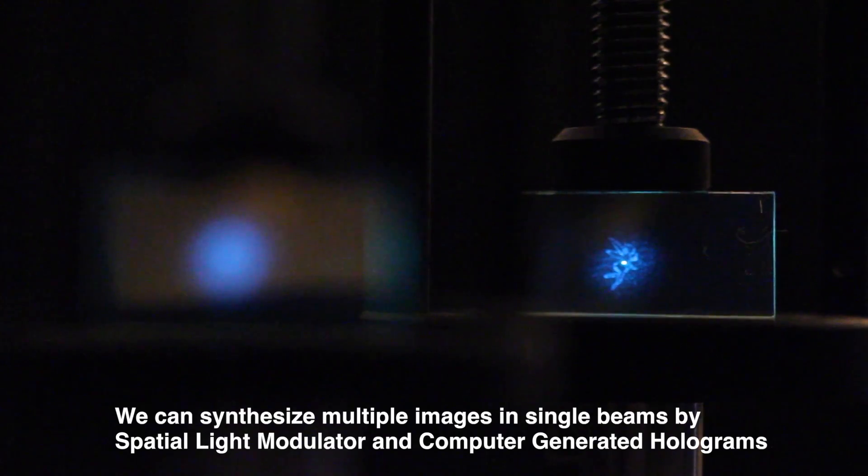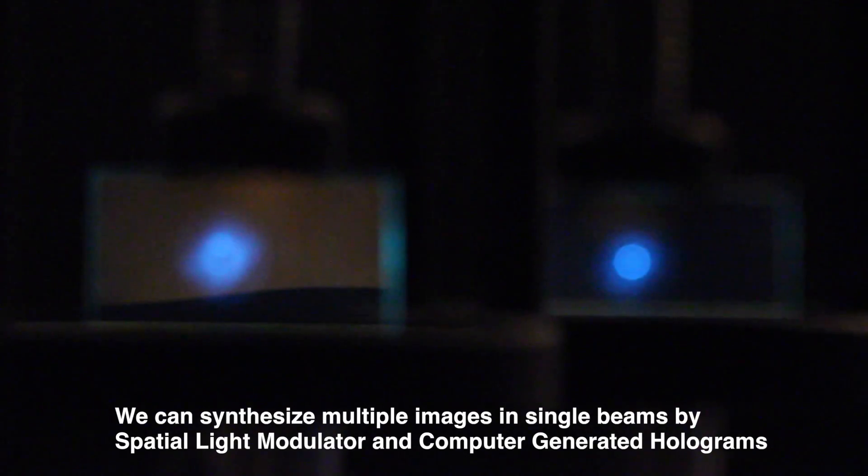We use an optical device called the Spatial Light Modulator to modify the phases of light rays and produce various spatial distributions of light based on interference.